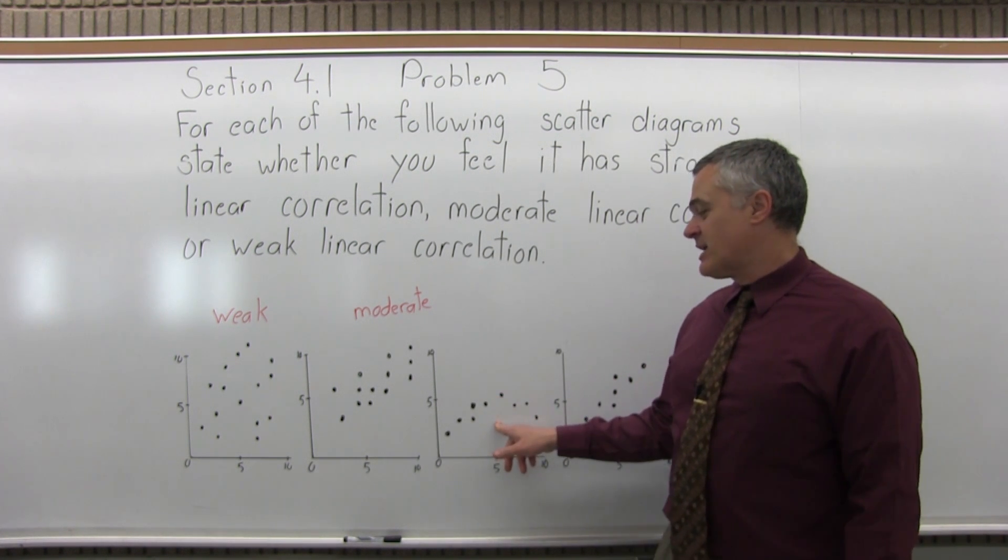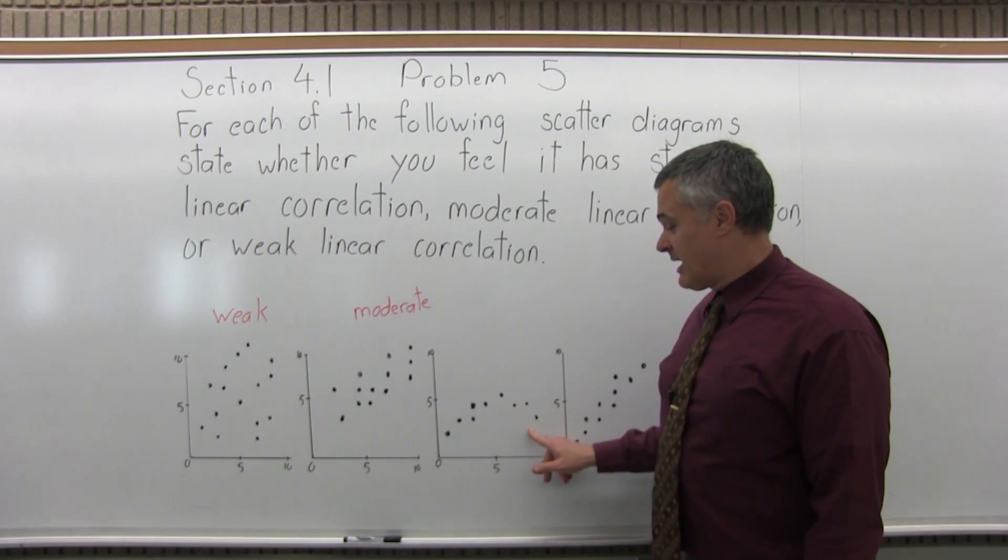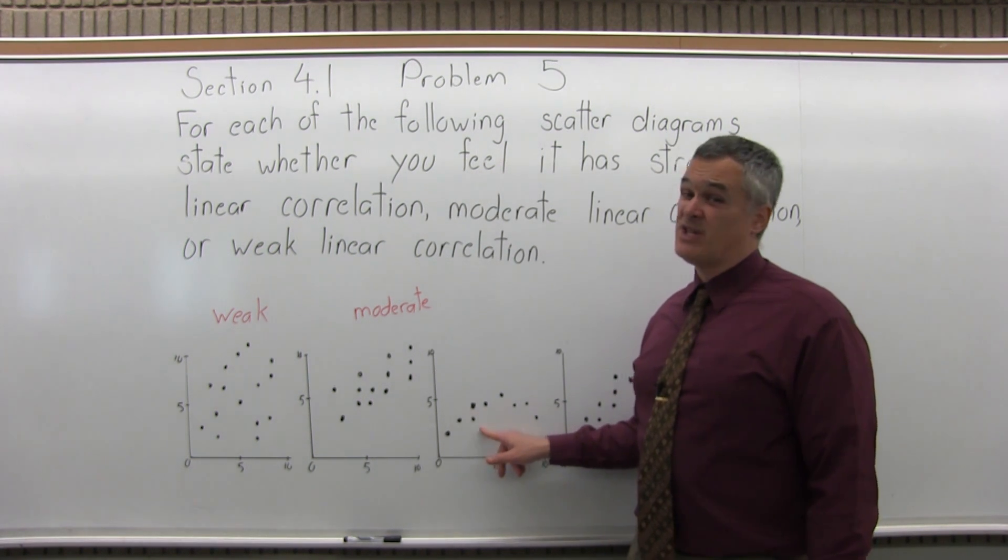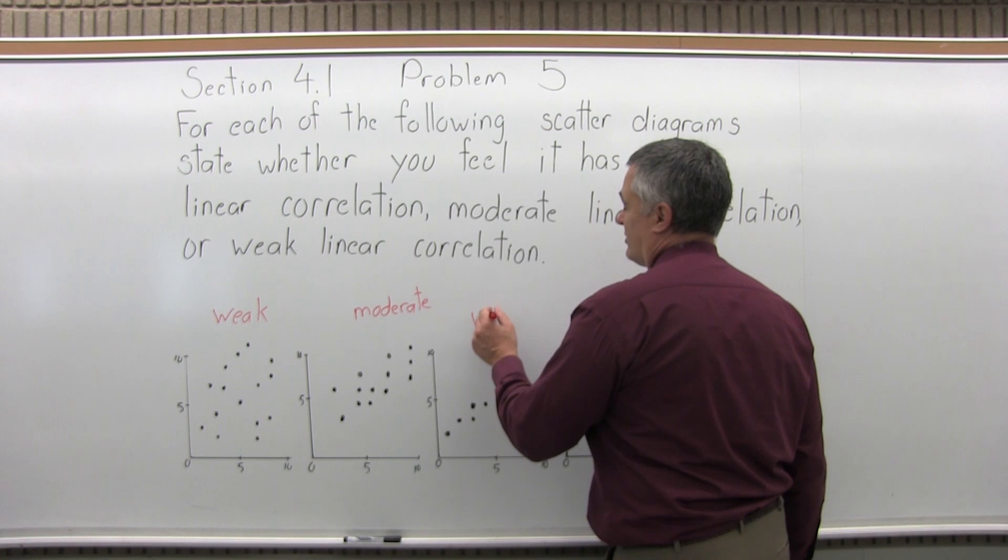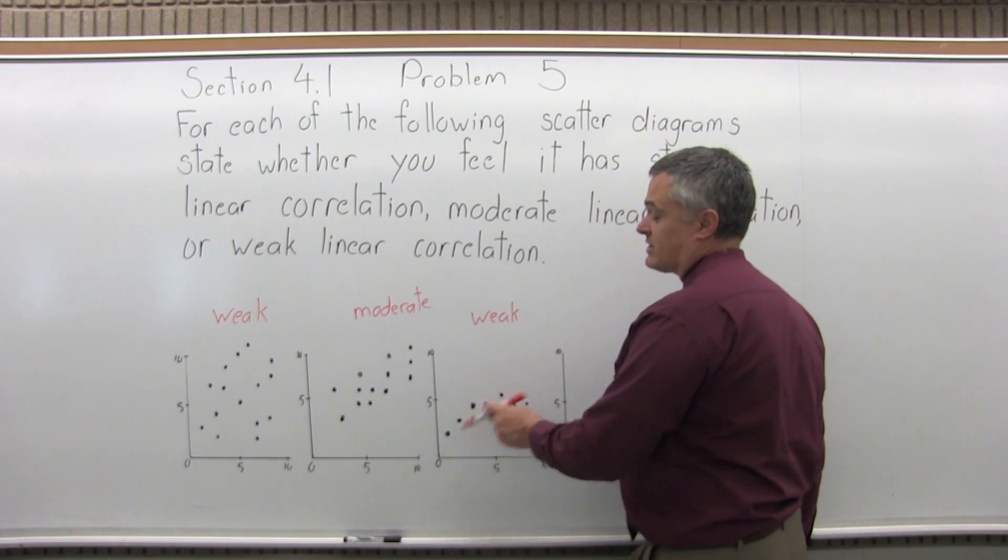The next scatter diagram, there is a clear pattern, and I can see where the line would go, but it's not a straight line. So this would be weak correlation, or you could even say no linear correlation, because it's a curve.